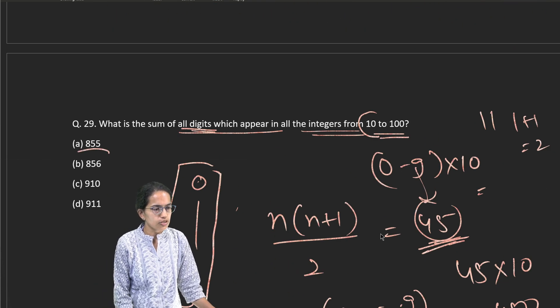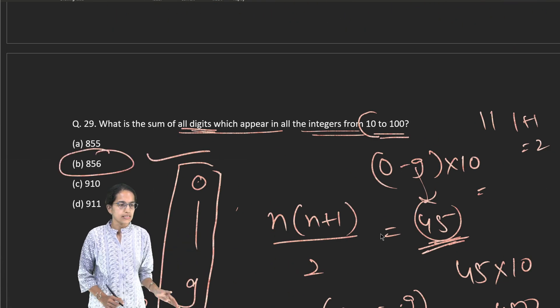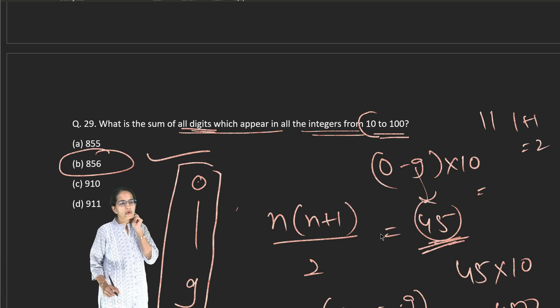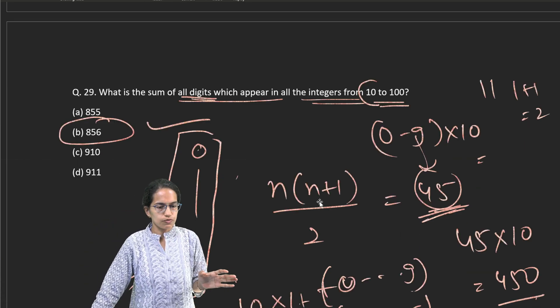So I will add 1 to it. So my answer becomes 856. And as you can see from the given choices, here we have 856 as the answer. So very important calculation and that's how you proceed for this question.